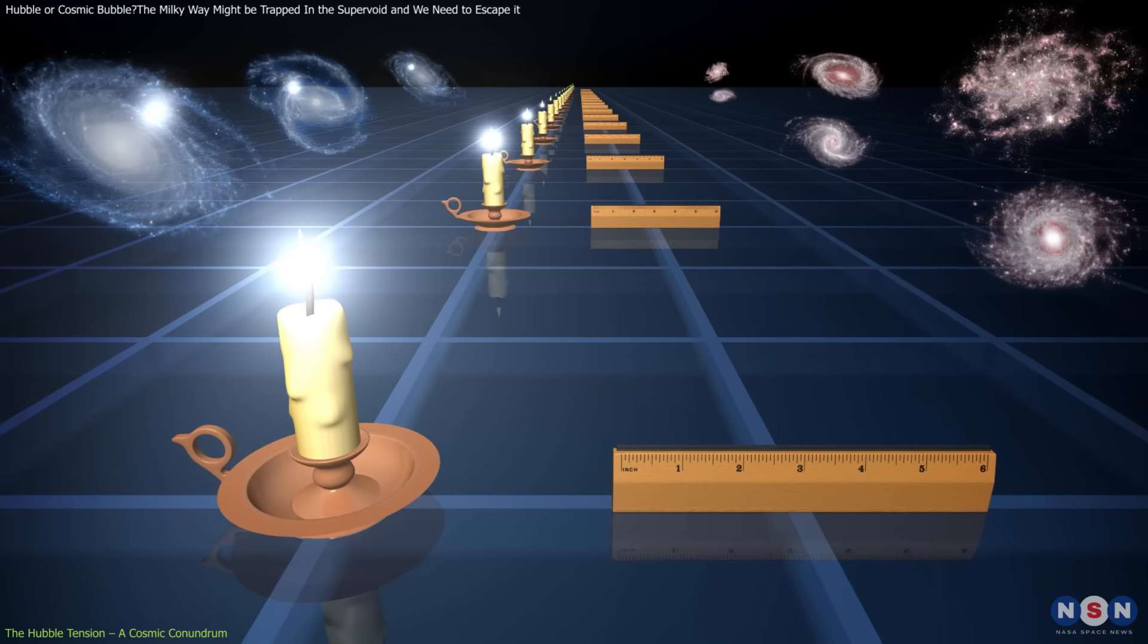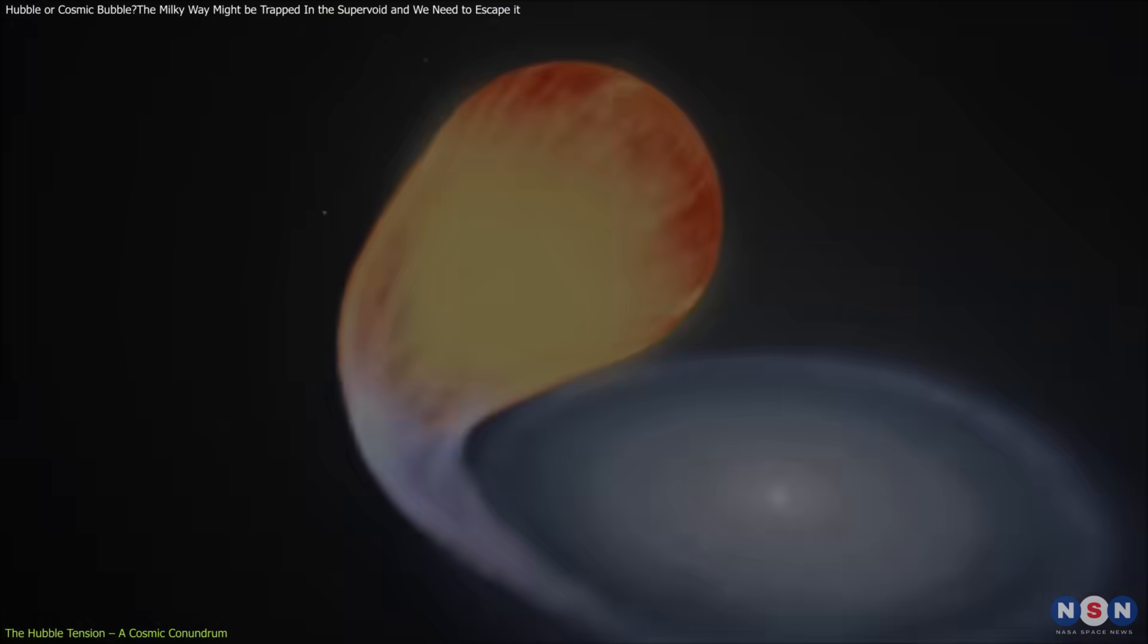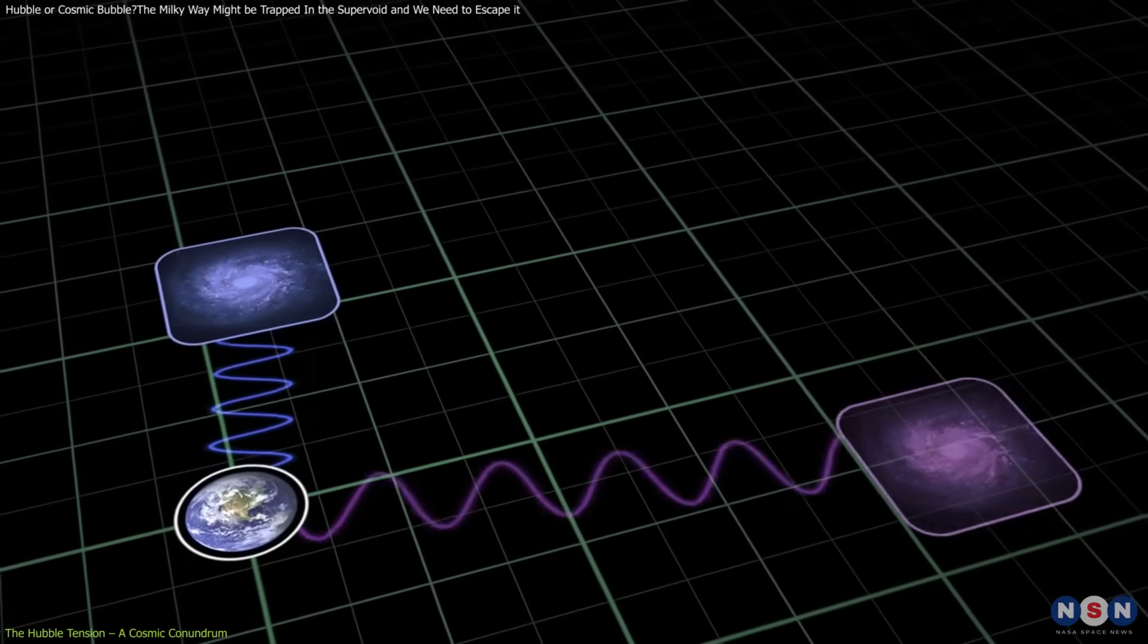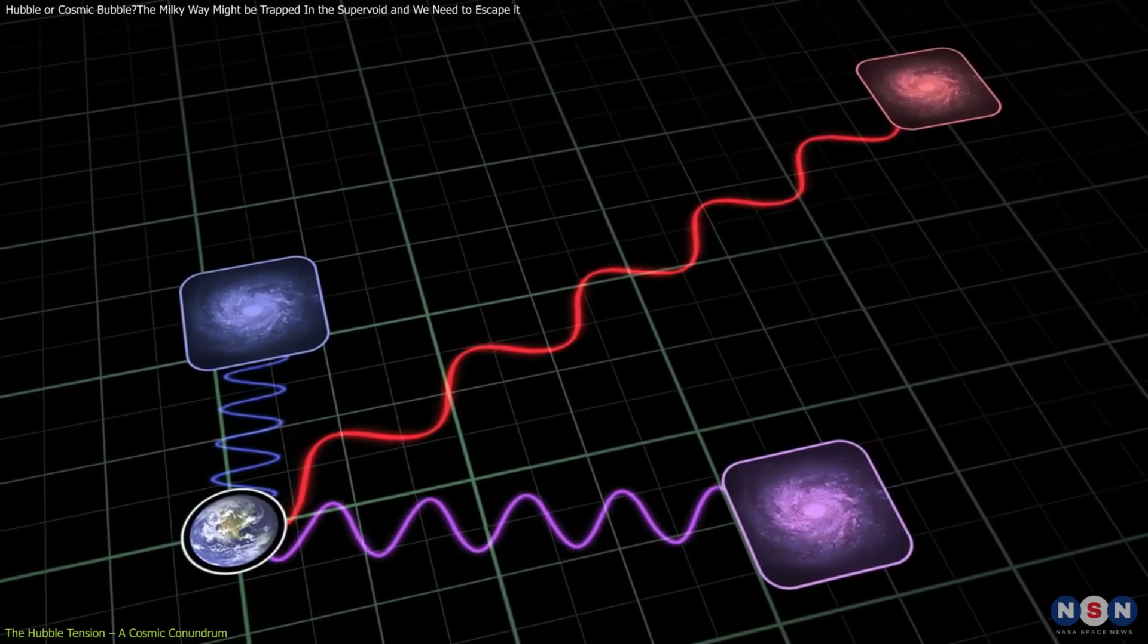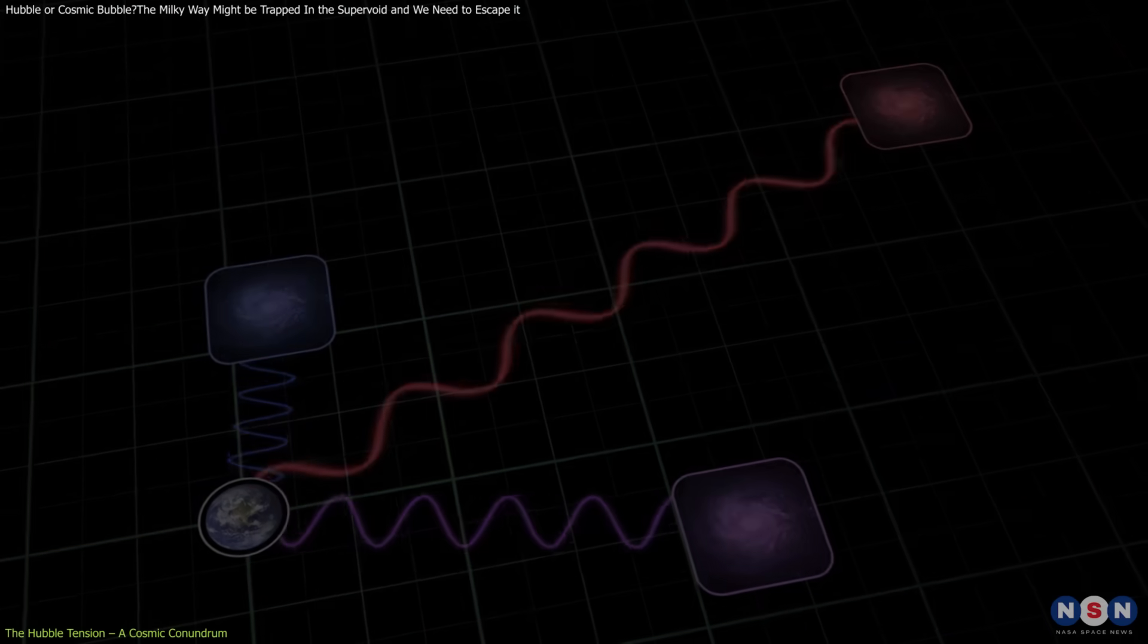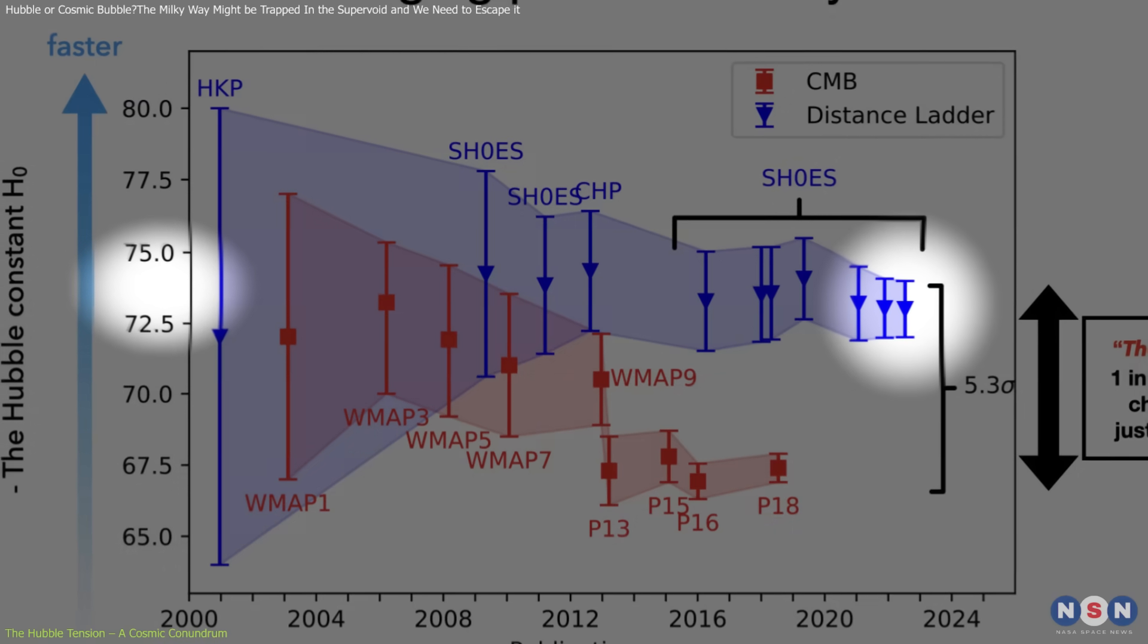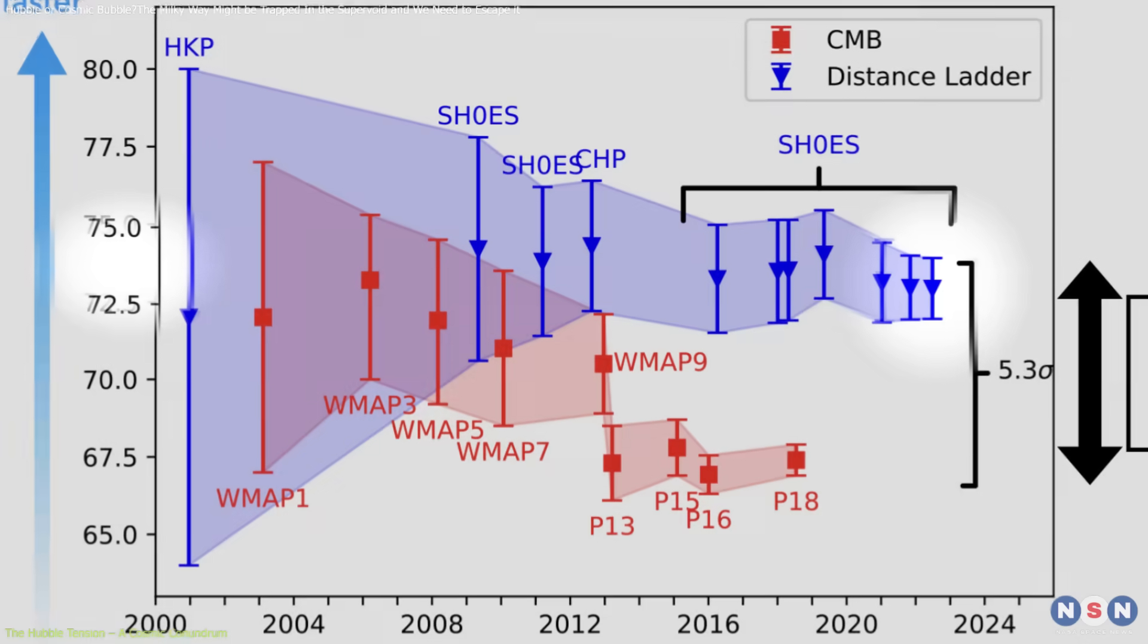The second method focuses on standard candles, such as type Ia supernova and Cepheid variable stars. These objects allow scientists to measure distances and redshifts, how much their light stretches as galaxies move away. This approach consistently produces a higher value, approximately 73.2 kilometers per second per megaparsec.